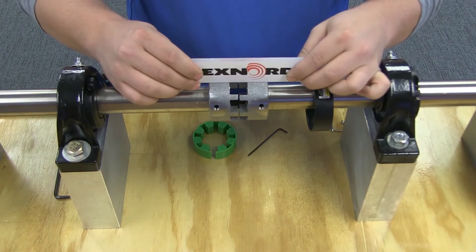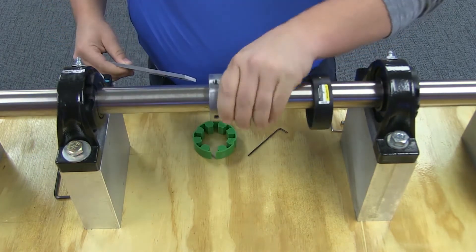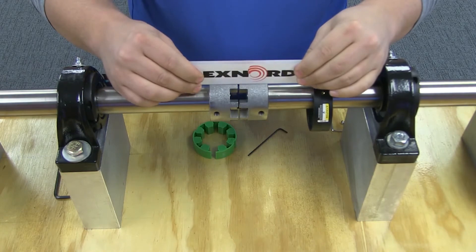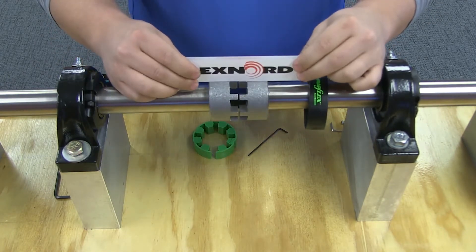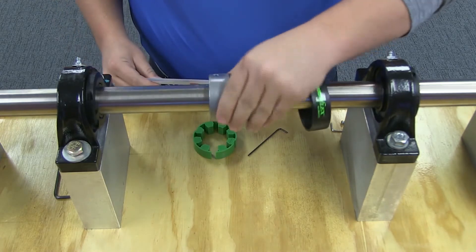Now, check the offset misalignment. Align so that a straight edge rests squarely on both hubs as shown at 90 degree intervals and check with feelers. Tighten all foundation bolts and repeat alignment checks, realigning the coupling if necessary.